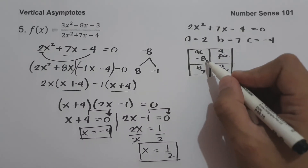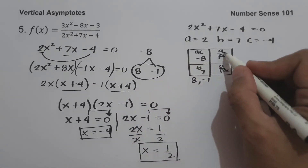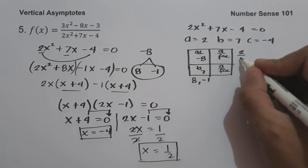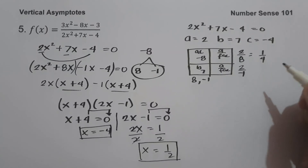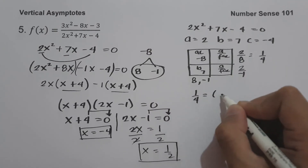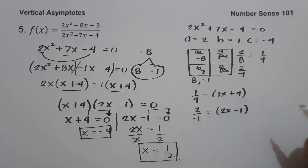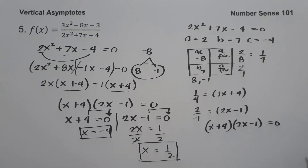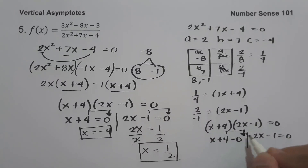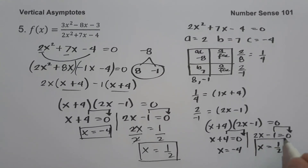Then we have the value of a as 2. The first factor uses 8: 2 over 8 simplifies to 1 fourth, giving us x plus 4. The second factor uses negative 1: 2 over negative 1 gives us 2x minus 1. So let us equate to 0: x plus 4 times 2x minus 1 equals 0. This gives x plus 4 equal to 0 and 2x minus 1 equal to 0, so x equals negative 4 and x equals 1 half. We come up with the same answer.